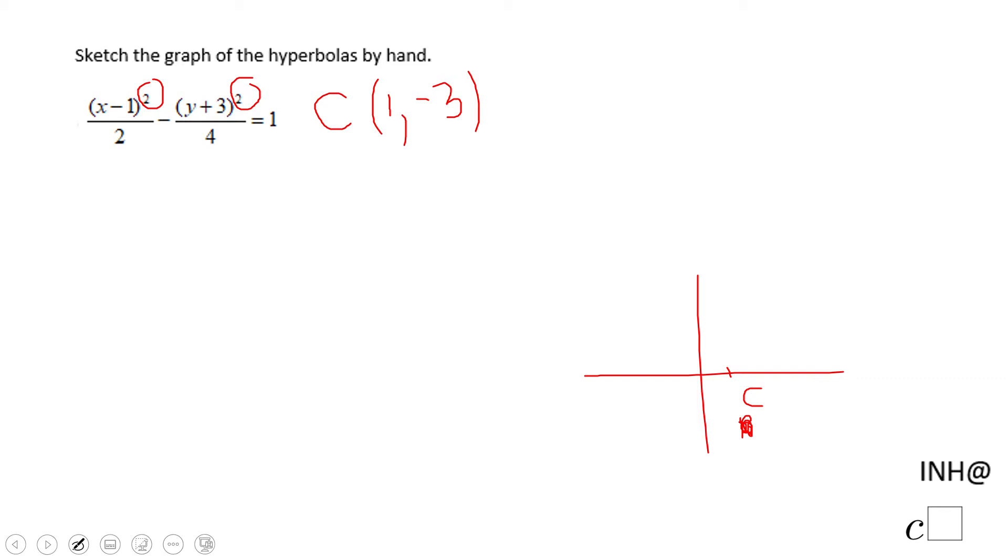y equals negative 3 is the focal axis. This is the focal axis, and now on this focal axis we're going to need to find the vertices. For finding the vertices we need to find a because the focal axis is a horizontal line.